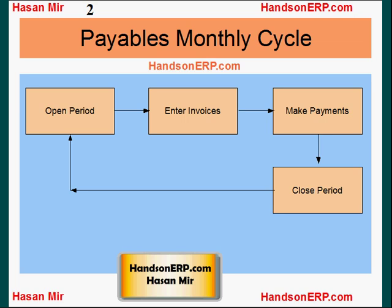Closing a period marks that no more transactions would be entered in that period. So closing a period means you're done with that period, and then you open the next period. Just imagine opening and closing a period like opening the lid of a jar — you put lots of stuff in the jar and then you close it. When you close the lid you can't enter anything else in that jar.